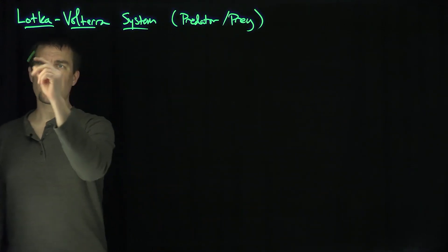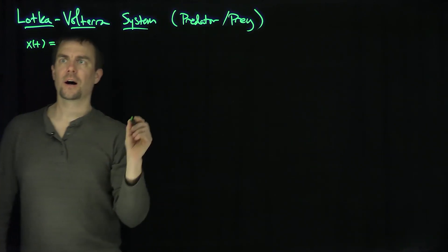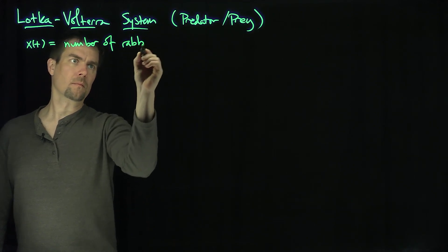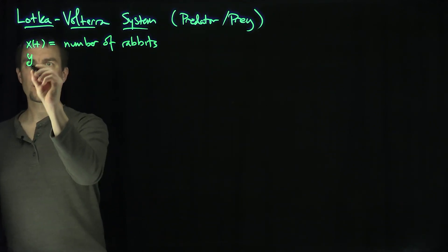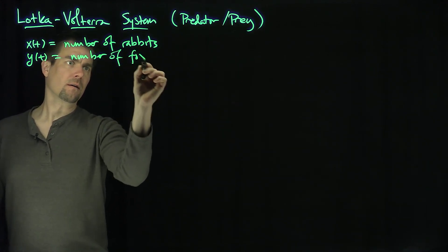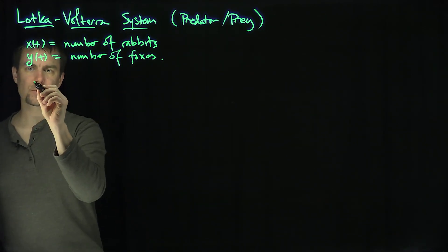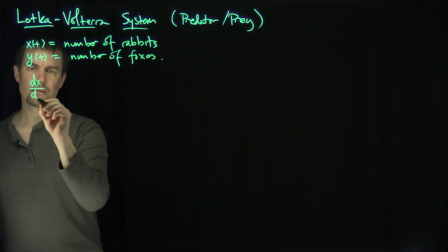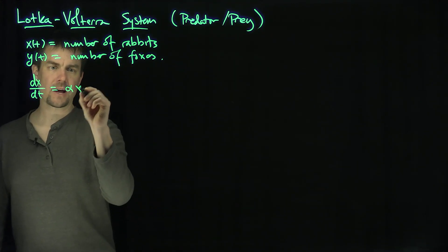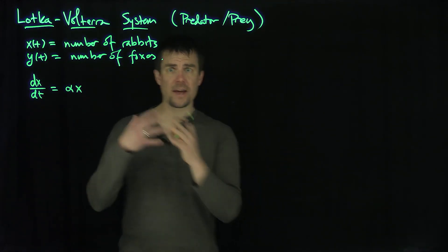So what's the idea? We might have something like: let x(t) be the number of rabbits, and y(t) be the population of foxes. What should happen in principle? We should have dx/dt — in some sense an exponential growth of rabbits, so we might have something like alpha times x. In other words, the prey grows very fast in the absence of a predator.